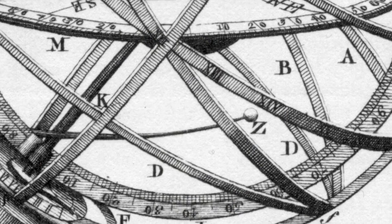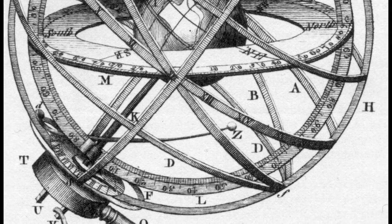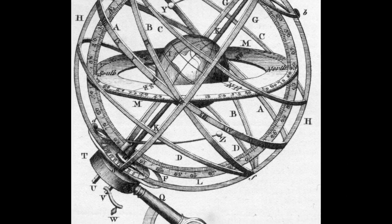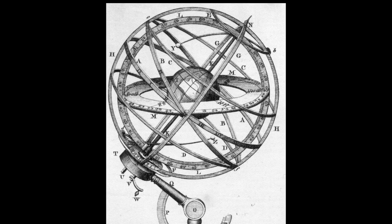The earliest armillary spheres put the earth at the center of the device. Later versions put the sun at the center, the heliocentric model of the solar system.